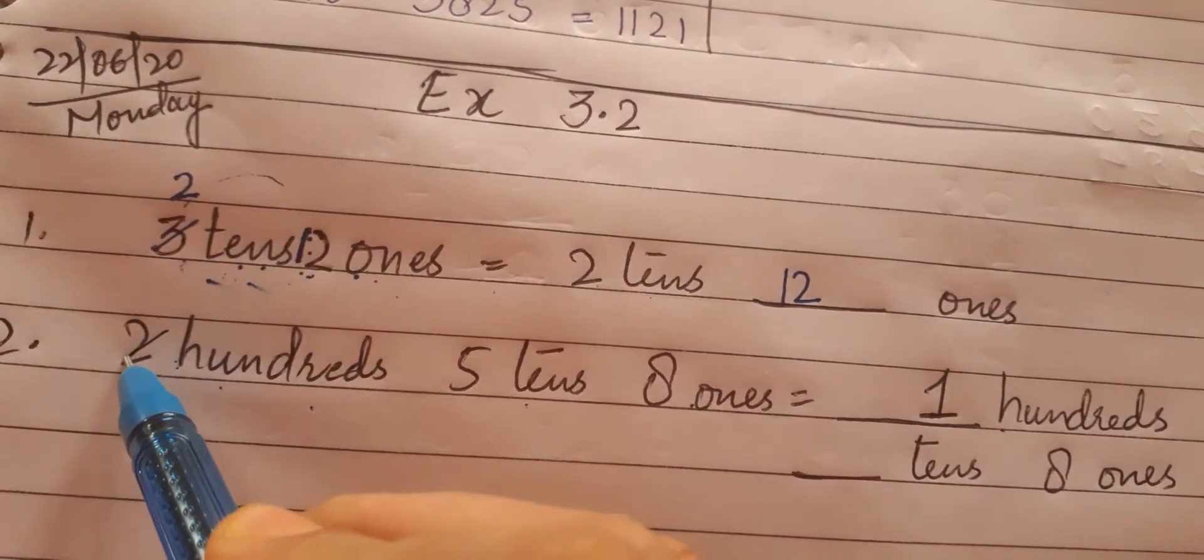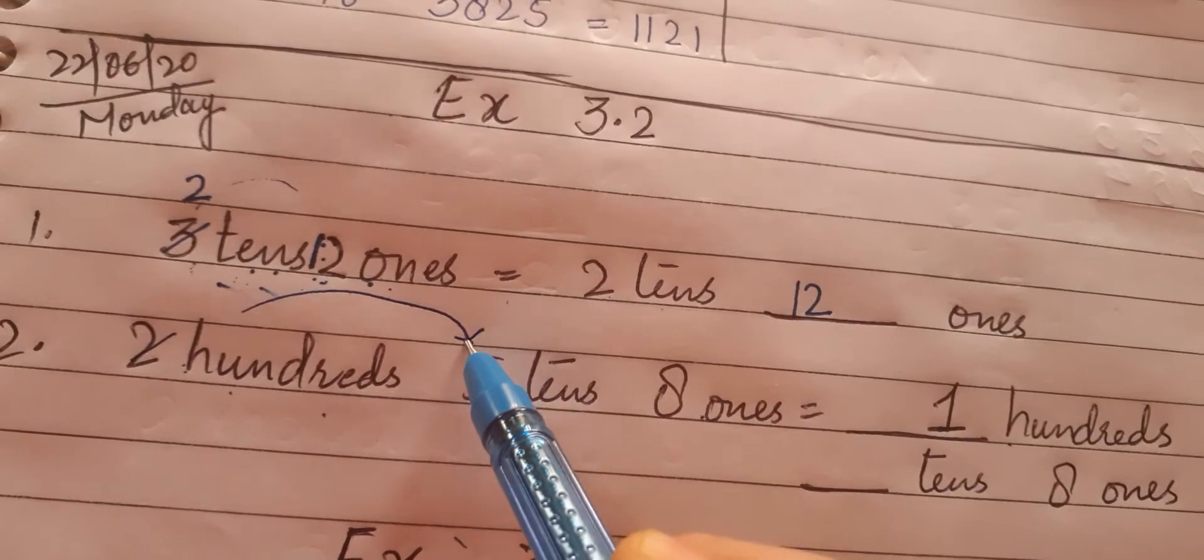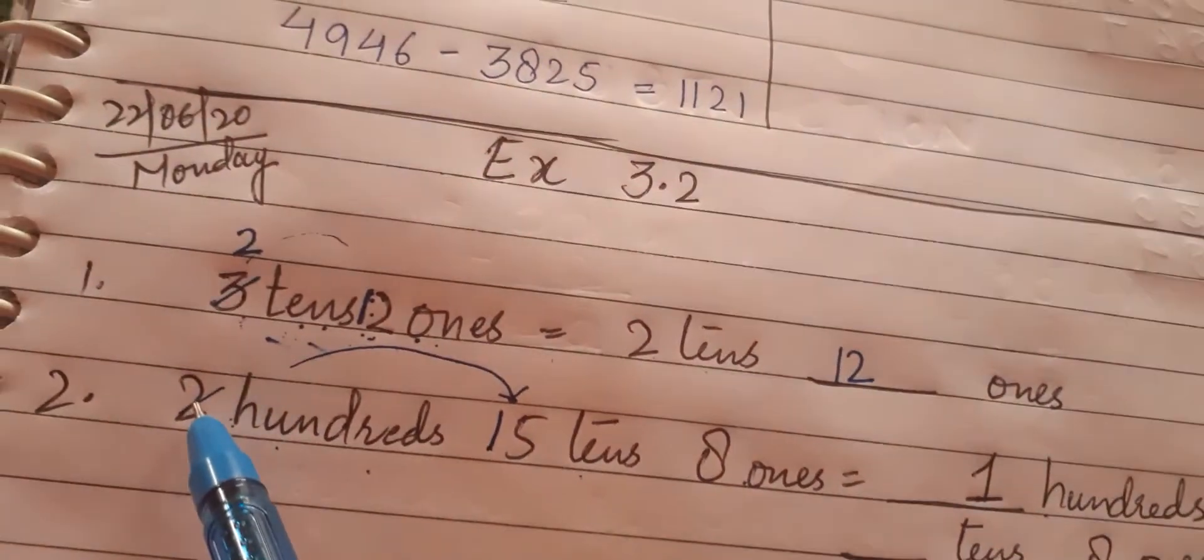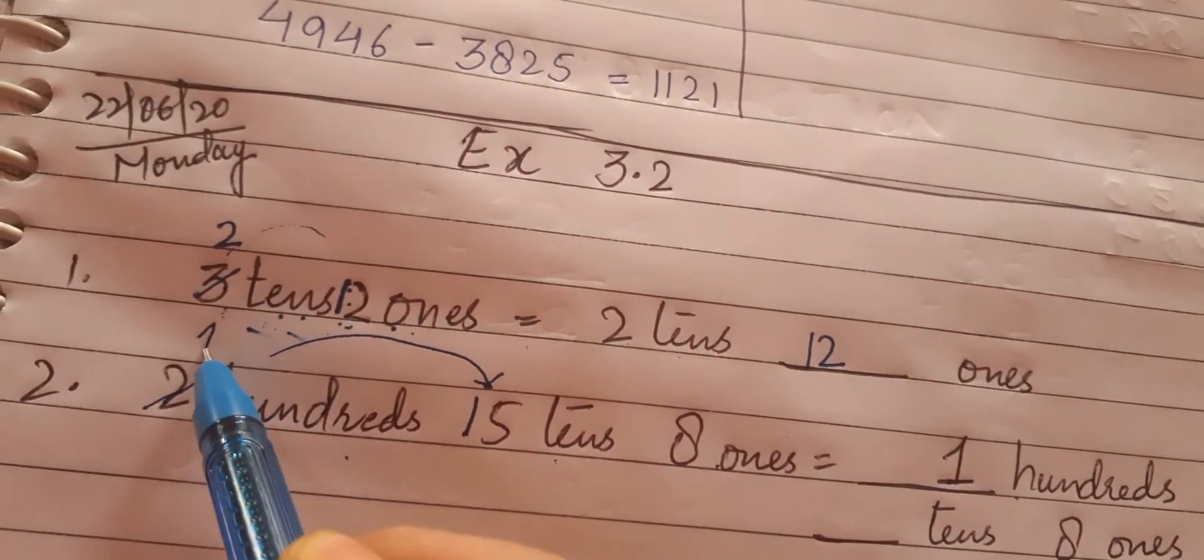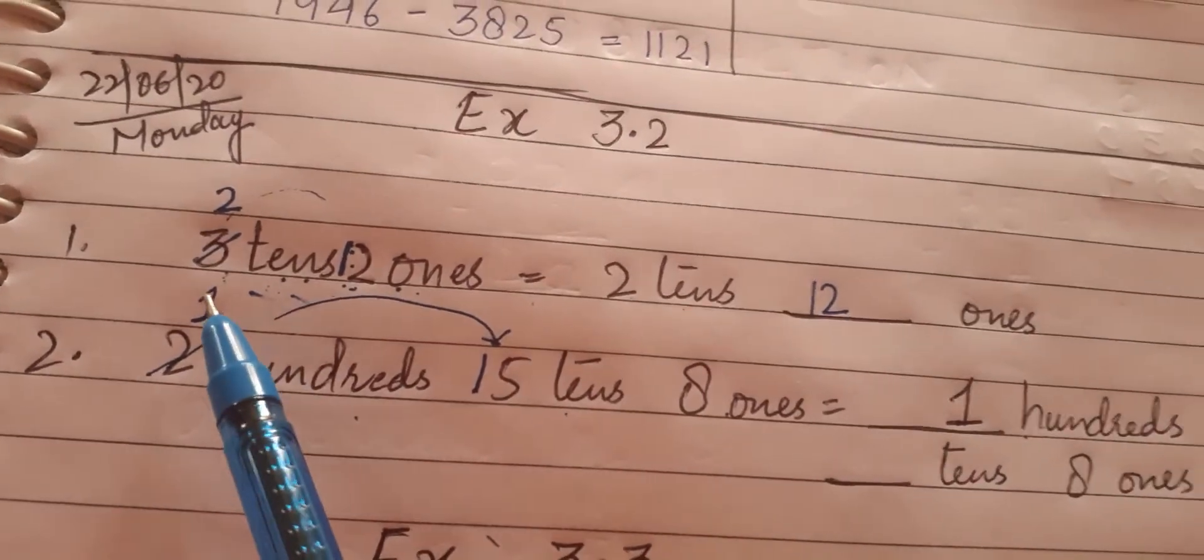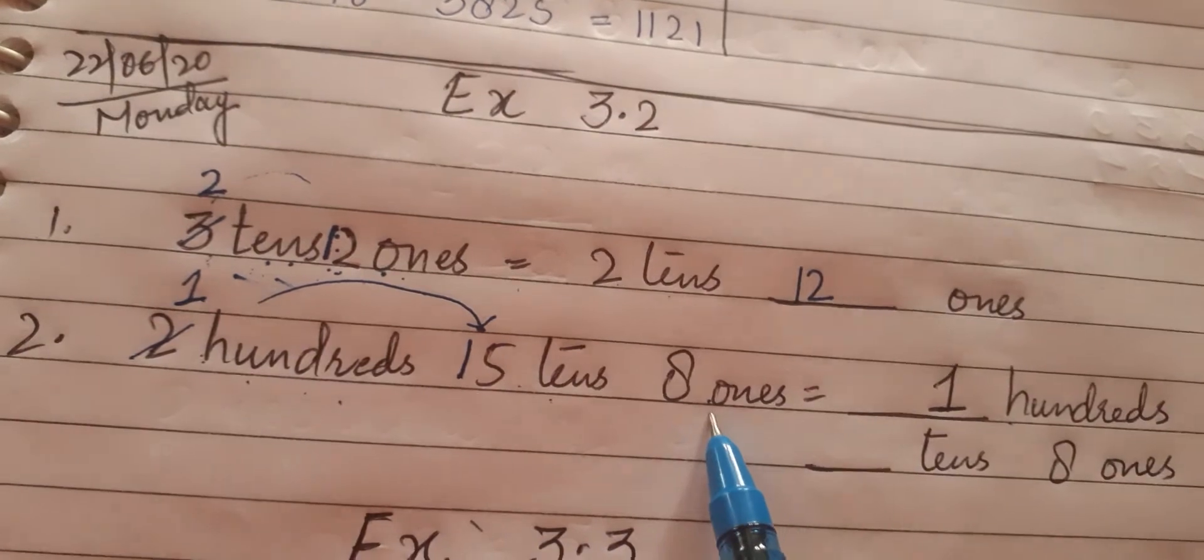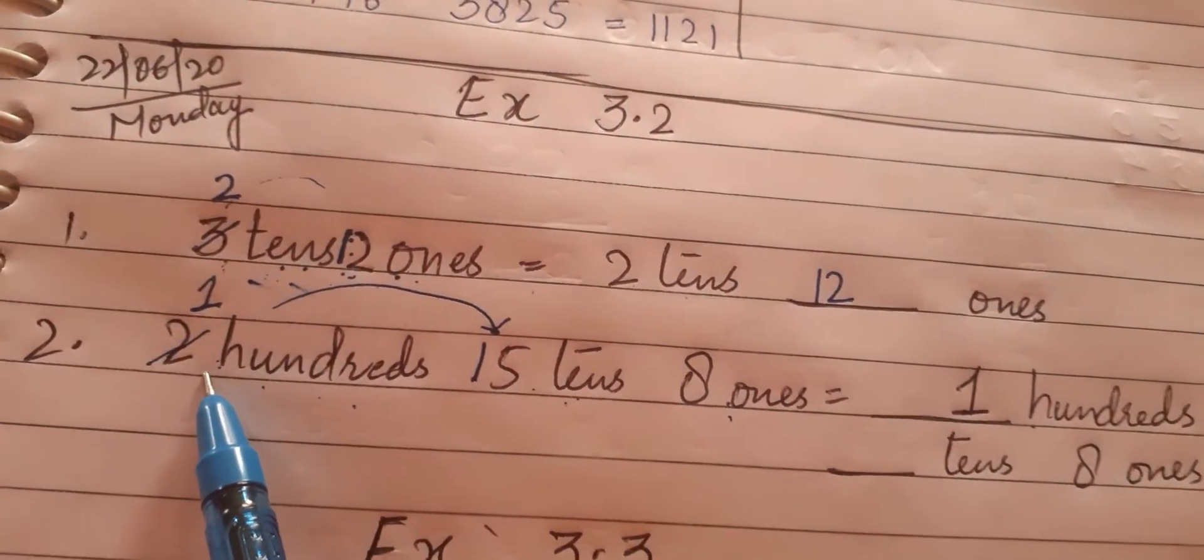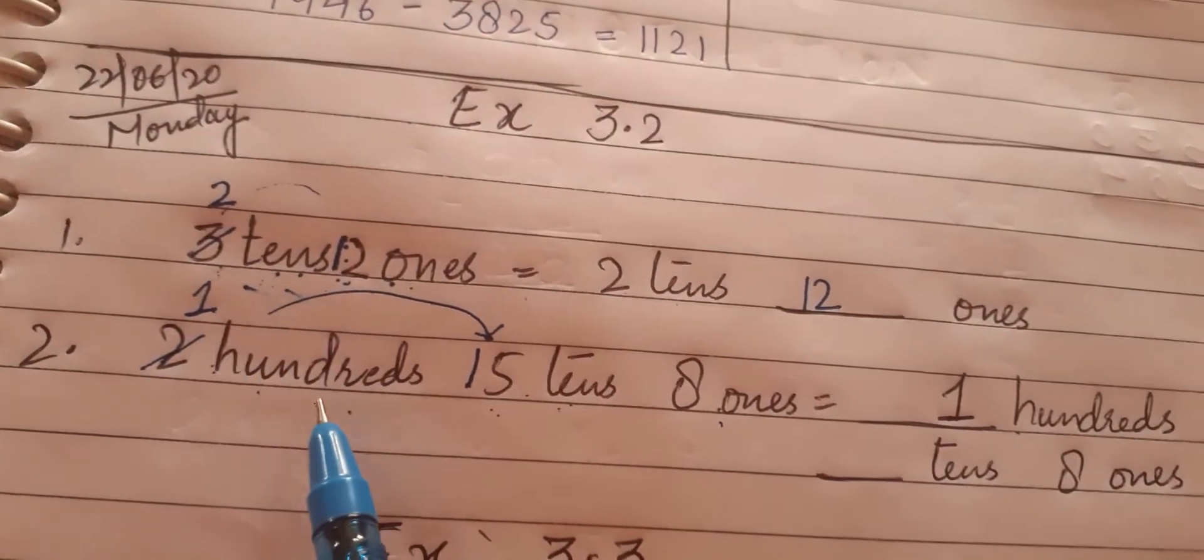Two hundred has given one of its numbers to tens place, so this will become 15 tens, and this 200 has lost its one number, so it will become one number less, that means 1 hundred. So our answer is 1 hundred, 15 tens, and 8 ones. Since it was 5 tens only, it has borrowed one number from the hundreds place. It has become 15 tens.